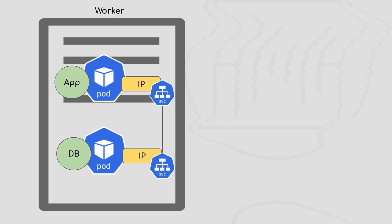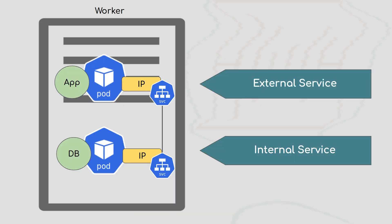Services can be internal or external. If your application needs to be accessed from outside the Kubernetes cluster, you create an external service. For your database, you create an internal service — because access from outside should not be allowed. Your application can directly access the database via the internal service.